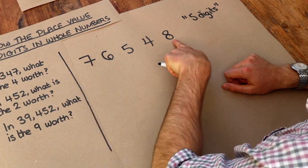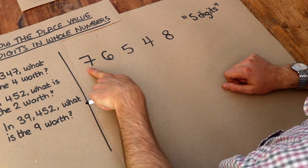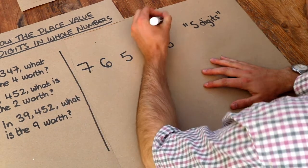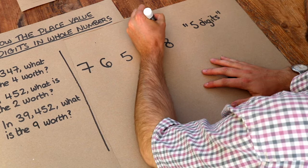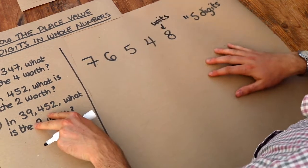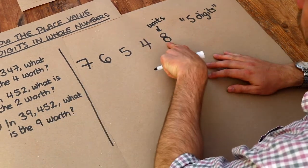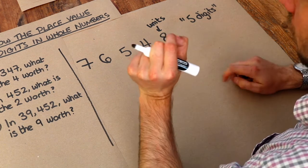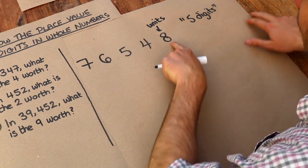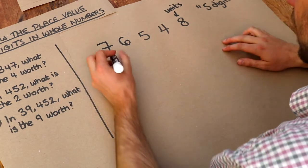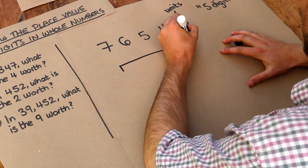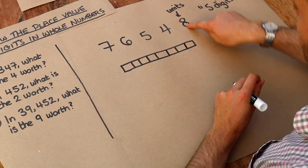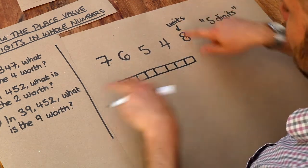As we go from right to left, what each of these digits is worth becomes more and more. On the very right, this is known as the units digit, and what that means is that each one of these is worth one thing — a unit just means one. So if we've got eight here, we could draw it as eight things. That's worth eight units, eight ones.